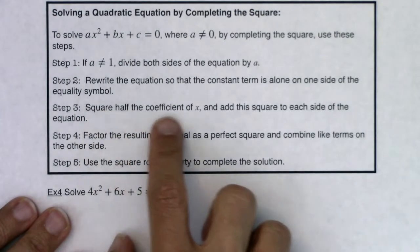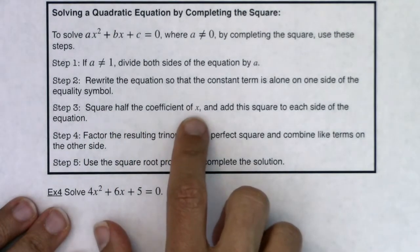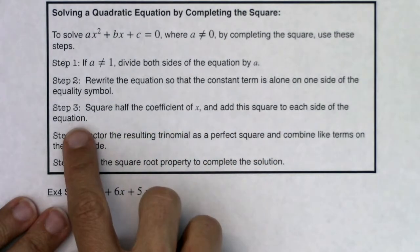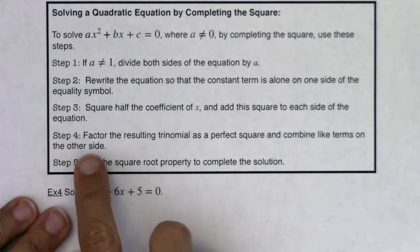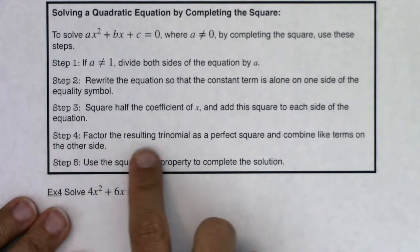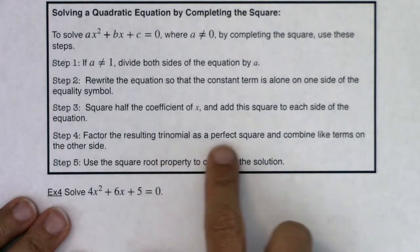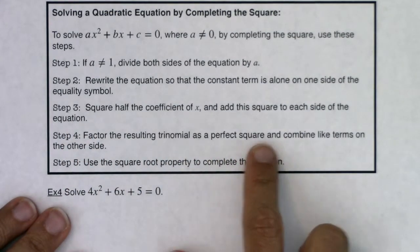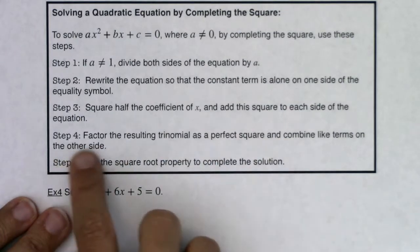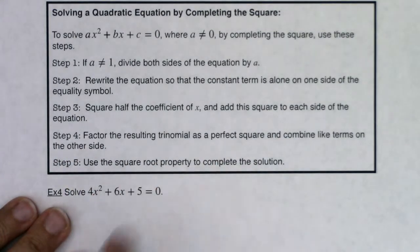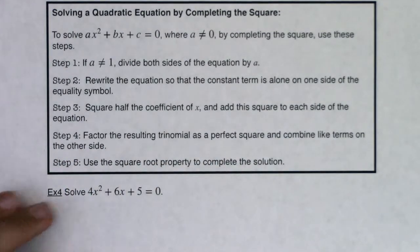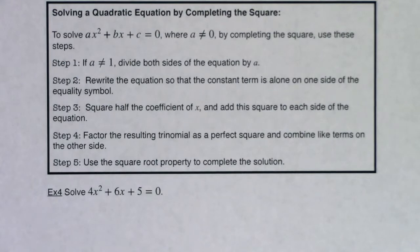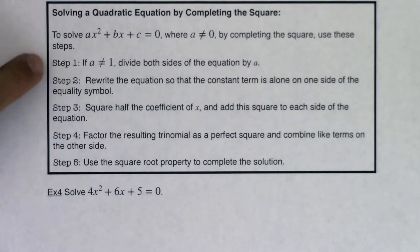We're going to square half of the coefficient in front of the x term and add this square to each side of the equation, and then we will factor the resulting trinomial as a perfect square and combine like terms on the other side. Then we'll use the square root property to complete the solution. Let's go through this a step at a time.